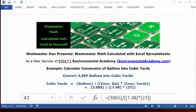So we're going to convert this in a calculation that we're going to set up in a formula. In the formula, we're going to calculate cubic yards, which equals gallons divided by the conversion factor to gallons times the conversion factor to yards. So the conversion factor to gallons is 7.48, and the conversion factor to yards is 27.